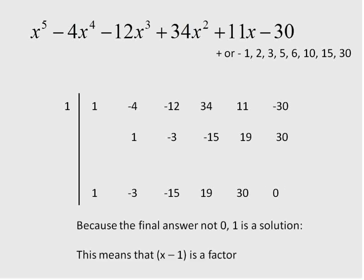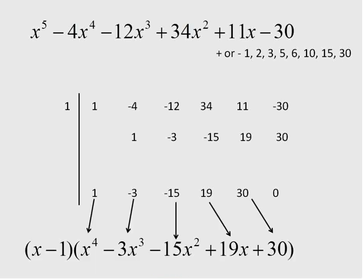When you get a 0 down here for your answer, 1 is a solution. So that means x minus 1 is a factor. 1 is a solution, meaning that this polynomial crosses the x-axis at the point 1. So the solution or the factor would be x minus 1. Now at this point, what we can do is start factoring.